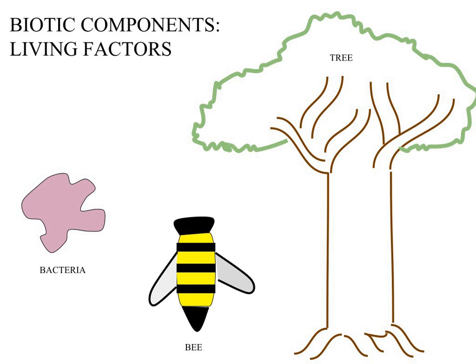Biotic components are the living things that shape an ecosystem. Examples of biotic components include animals, plants, fungi, and bacteria. Abiotic components are non-living components that influence an ecosystem. Examples of abiotic factors are temperature, air currents, and minerals. The factors mentioned above may either cause an increase or decrease in population size depending on the organism and ecosystem in question.